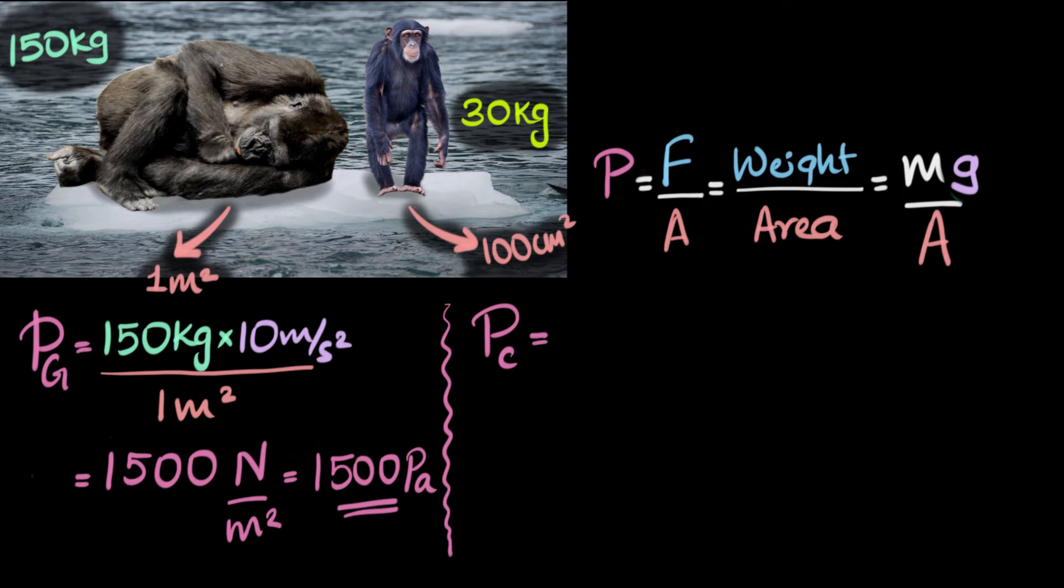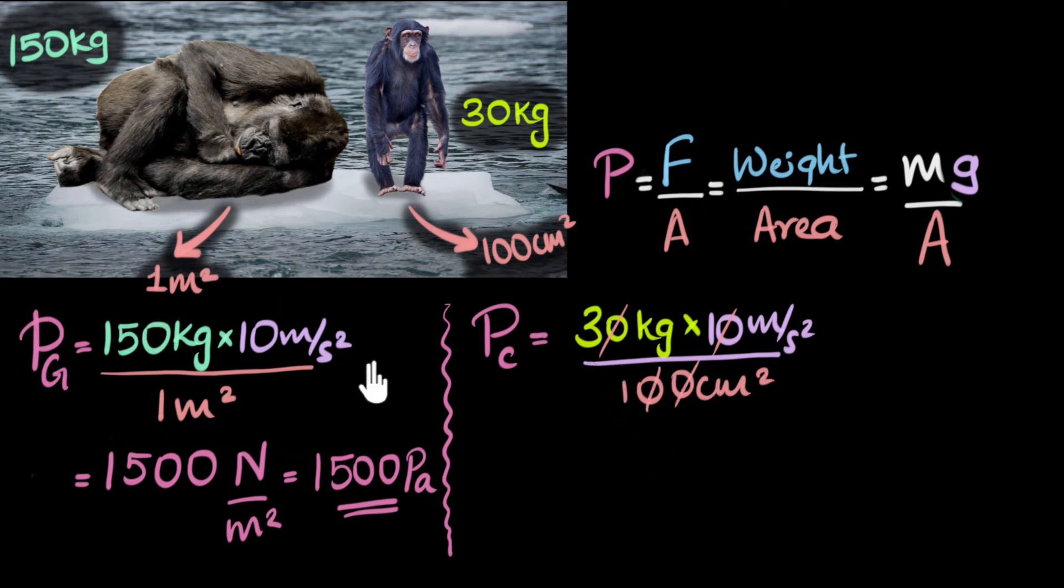It's going to be the mass of the chimpanzee, which is a very tiny number. It's just 30 kilogram, compared to the gorilla, times 10 meters per second squared, divided by the area, and that area is 100 centimeters squared. So let's divide this. The zeros cancel out and I end up with three. I get three kilogram meter per second squared, which is again Newton, because that's the unit of force, divided by centimeter squared.